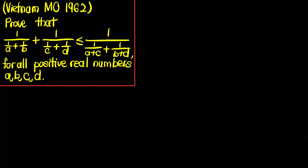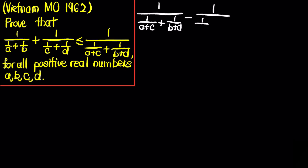To get started with the solution, we can move everything around so that we prove 1/(1/(a+c) + 1/(b+d)) minus 1/(1/a + 1/b) minus 1/(1/c + 1/d) is greater than or equal to 0. If we can show that this is true, then we are done. The form we have here is really hard to work with since we have fractions in the denominator of each fraction. We can try to simplify each fraction and combine them into a single fraction to show it is greater than or equal to 0.